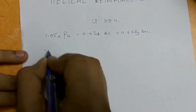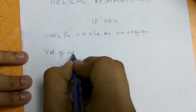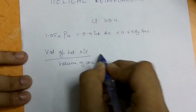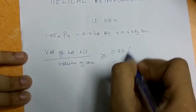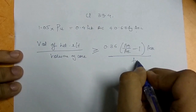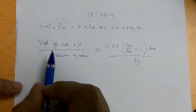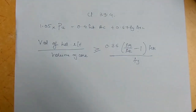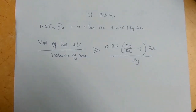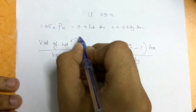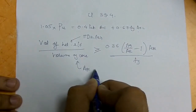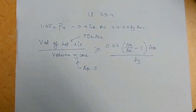The IS code condition is that the ratio of volume of helical reinforcement to volume of core should be greater than or equal to 0.36 × (Ag/Ak − 1) × (fck/fy). The volume of helical reinforcement is π × DK × Ash, and the volume of core is Ak × S.